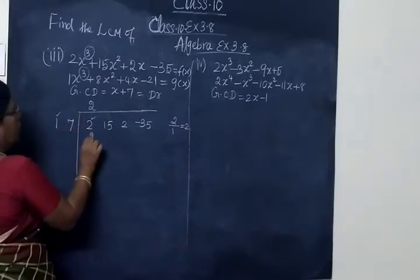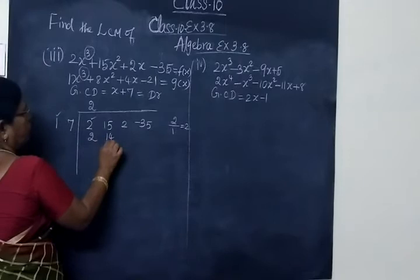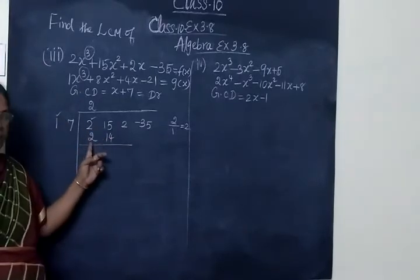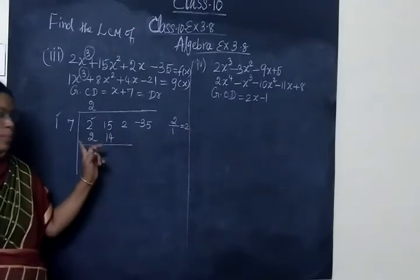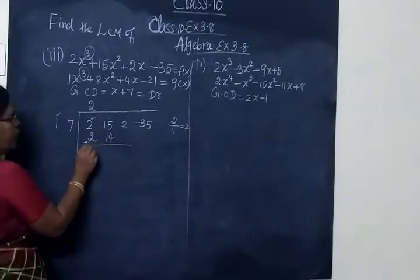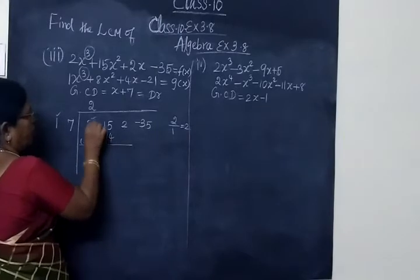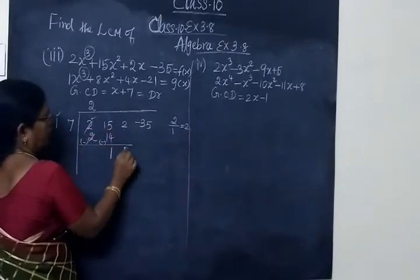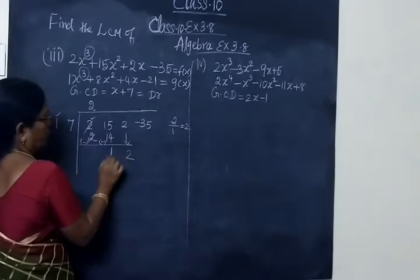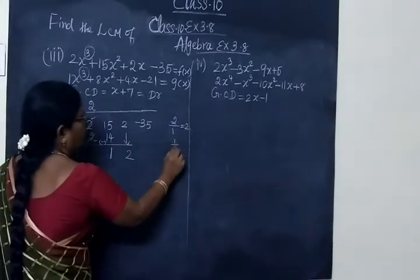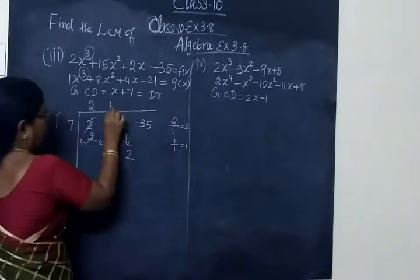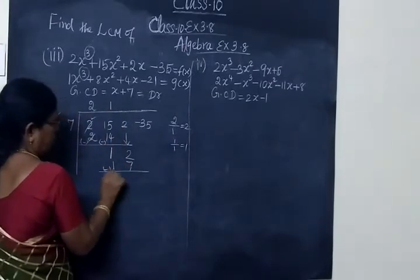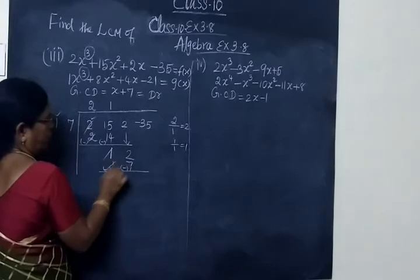So 2 multiplied by 7 is 14. We divide. This is the sign — minus, minus. Cancel: 15 minus 14 gives 1. Then bring down 2. So 1 divided by 1 is 1. Write 1 at the top. The same: 1 times 7. Minus, minus. 1 and 1 cancel.